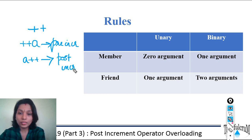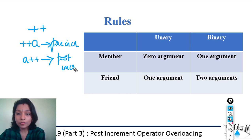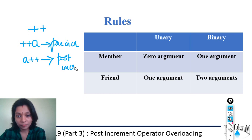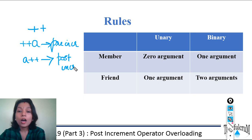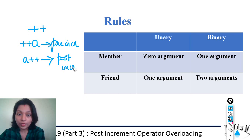Before overloading the pre and post increment operators, let's quickly recollect the rules. If you want to overload a unary operator as a member function of the class, there should not be any arguments to the operator overloaded function. For a binary operator as a member function, there should be one argument. Overloading a unary operator as a friend function requires one argument, and overloading a binary operator as a friend function requires two arguments.